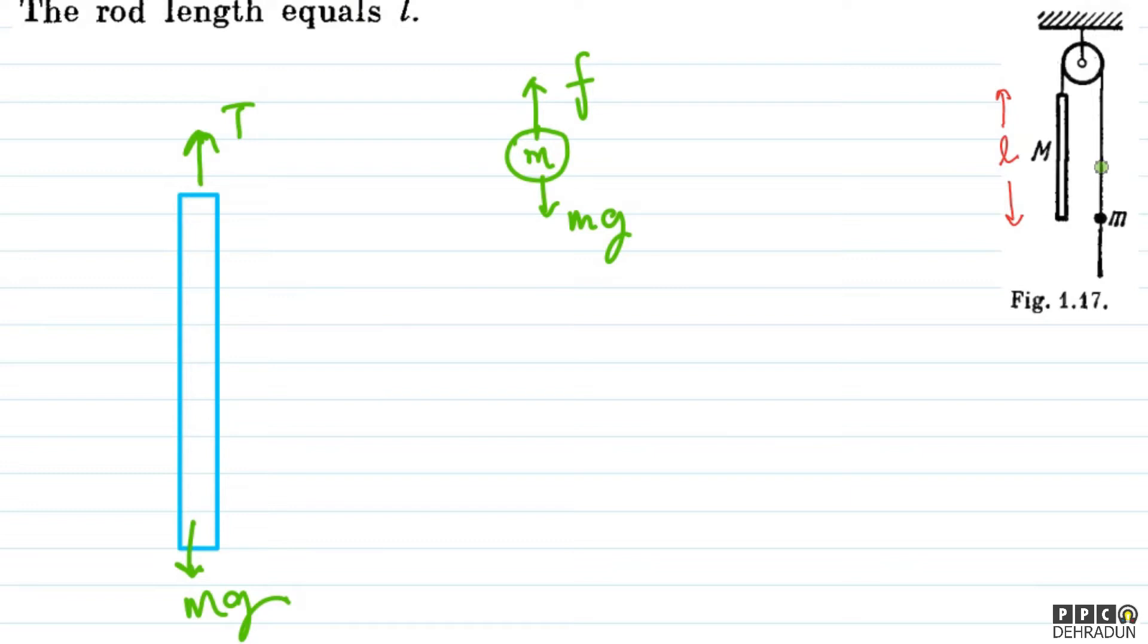Now see, if we talk about this thread, then the friction and tension are basically equal, because this thread is massless. So if friction is acting on one side and tension on the other side, both have to be equal. The friction is the same as the tension here. So we can simply say that tension is equal to friction.